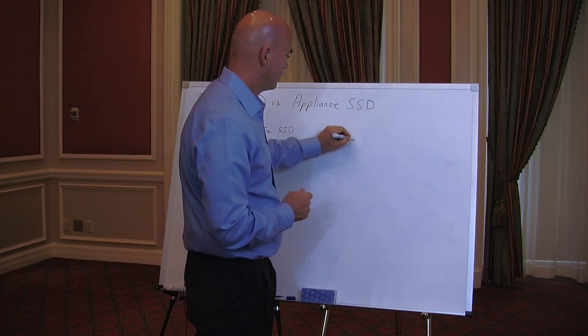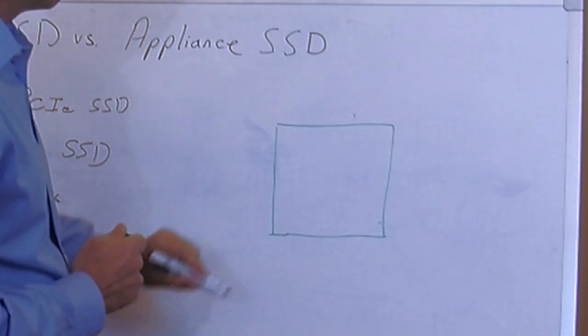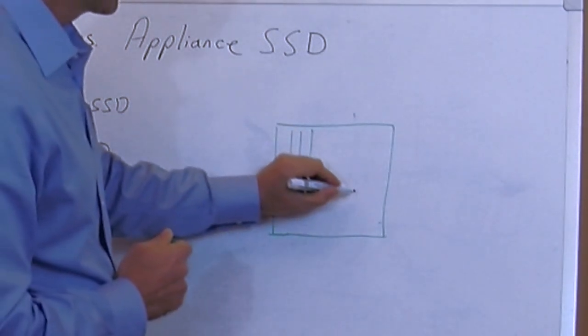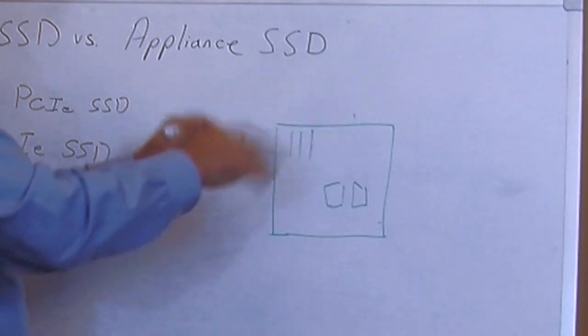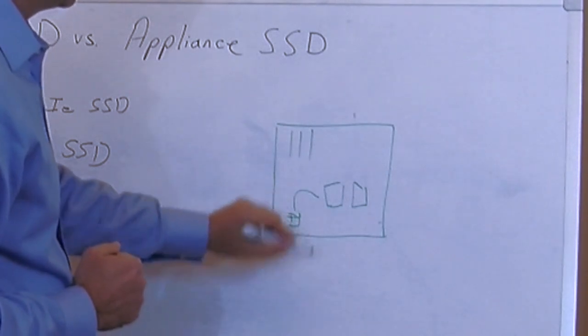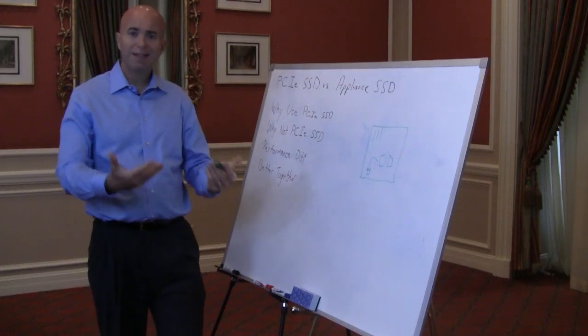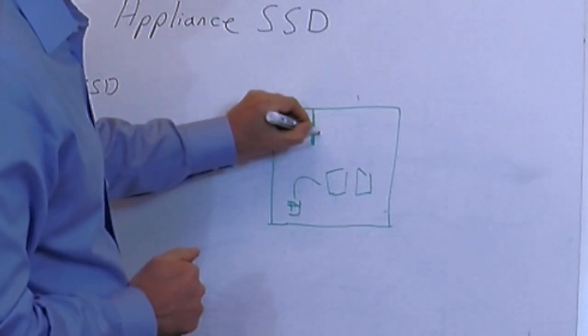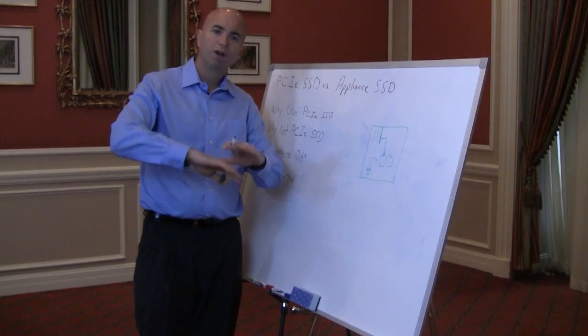Well, the number one reason is going to be performance. If I draw out a server motherboard, typically it'll have a number of PCIe slots. It'll have a couple or more CPU processor slots and power supplies, things like that. And then, of course, it has a connection over to some form of hard drive storage. So the advantage that PCIe SSDs will have is that because they go right in the slot, they have a direct PCIe channel, essentially, to the processor. So very little latency.